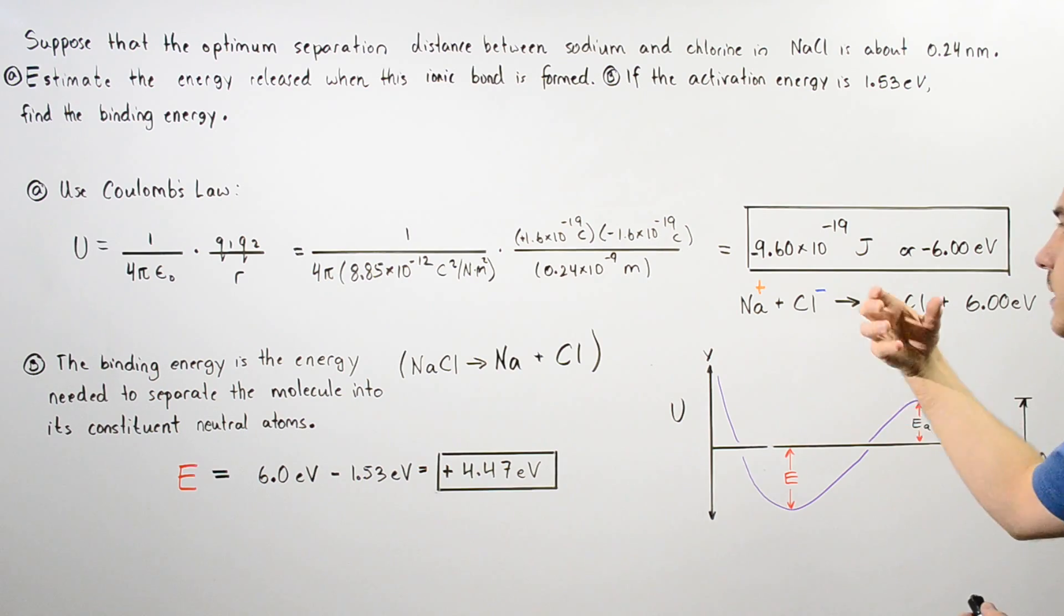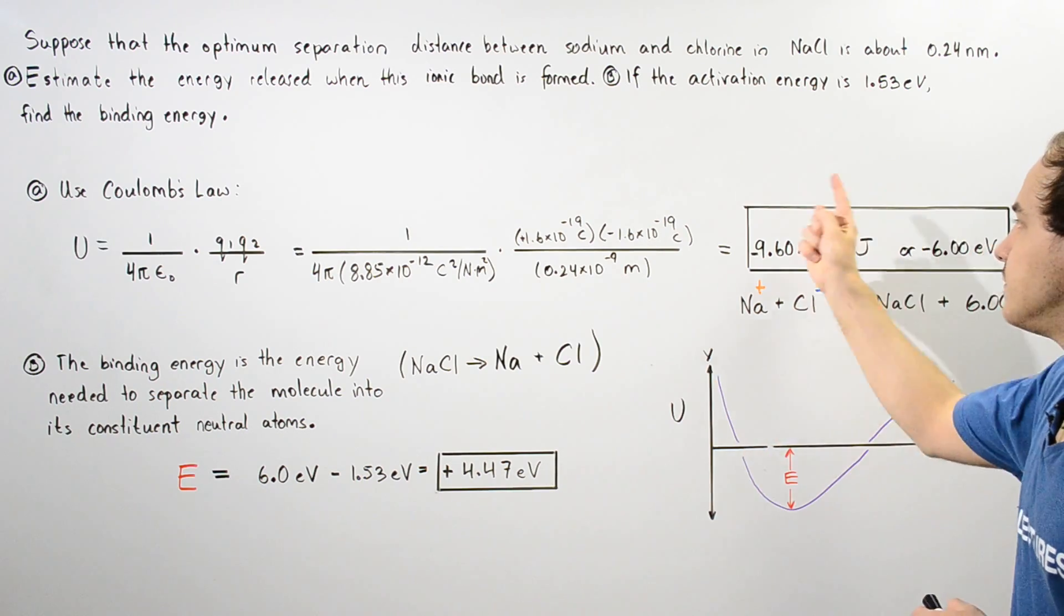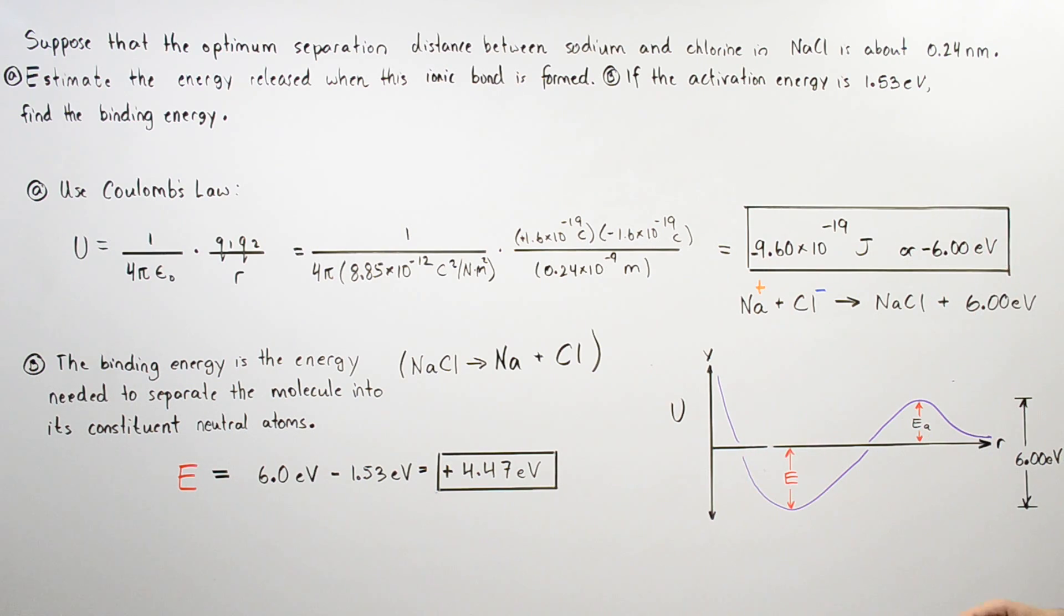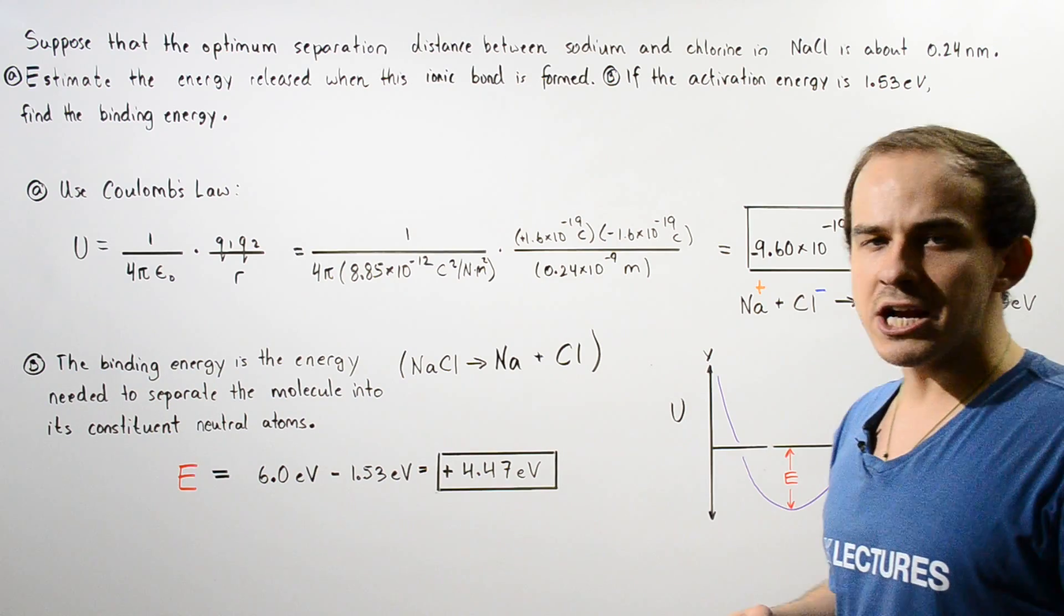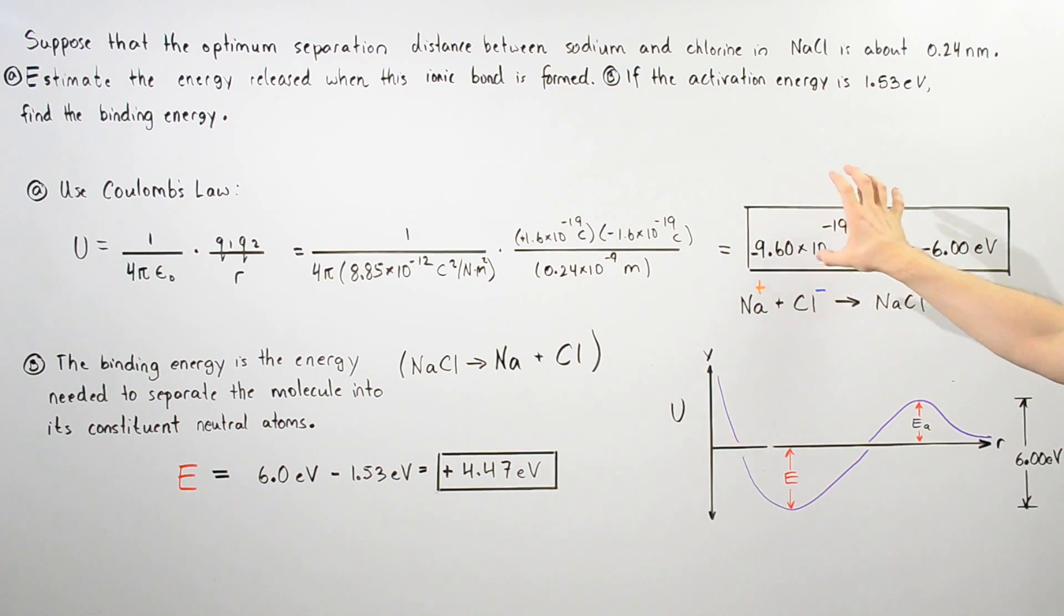We can convert this into electron volts by dividing by 1.6 times 10 to negative 19, and we get about negative 6.00 electron volts. This is basically the energy that is released when these two ions combined to form our ionic compound, our ionic molecule.